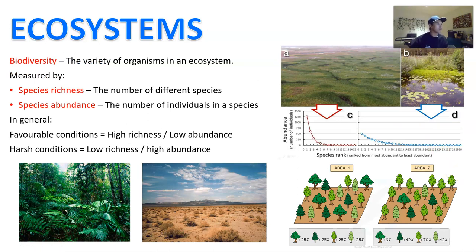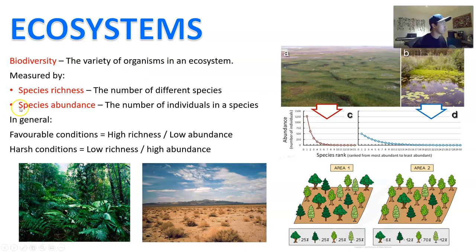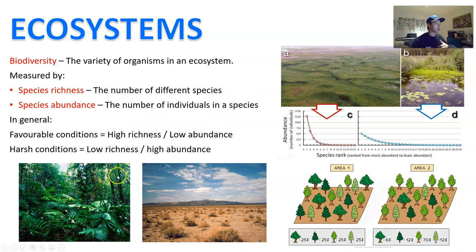When it comes to ecosystems, biodiversity is the variety of organisms in the ecosystem. We measure biodiversity by a few metrics, one of which is species richness — how many different species are living in that particular ecosystem — and species abundance — how many individuals there are in that particular location. For example, a desert will have low species richness but high abundance of those species.